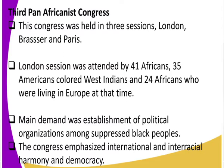The main demand was the establishment of political organization amongst oppressed black peoples. After these conferences, this is when the issue of political parties began. The Congress also emphasized international harmony and democracy. The issue of racial segregation would be a story of the past.